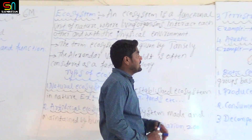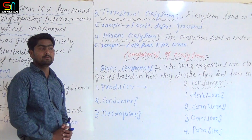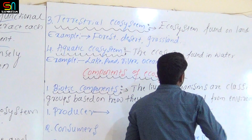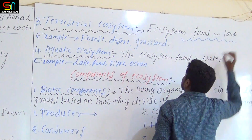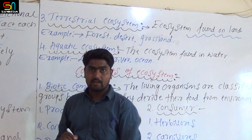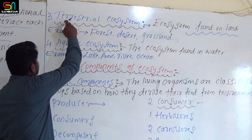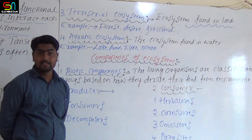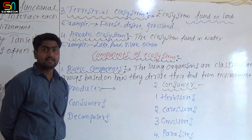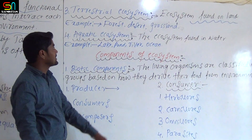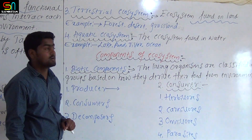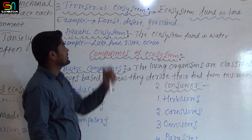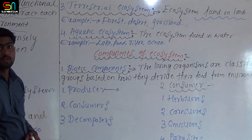Third type: terrestrial ecosystem. An ecosystem found on land is called a terrestrial ecosystem. Examples include forest ecosystem, desert ecosystem, and grassland ecosystem.